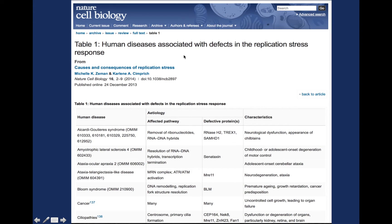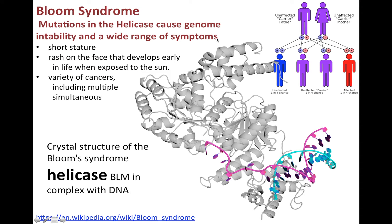There are also human diseases associated with defects in the replication stress response. So if DNA is damaged, it has to be repaired and you need a DNA polymerase to synthesize the new nucleotides to replace the damaged ones. Bloom syndrome is a disease caused by mutations in a helicase. This is a ribbon diagram of the helicase molecule. Here is a molecule of DNA with the two strands in pink and green, and here you can see the double helical nature. Down here, this is where the enzyme helicase is breaking apart the hydrogen bonds that hold the complementary bases together. If you have mutations in this helicase, you can survive but you have certain phenotypic features: short stature, developing rashes on the face early in life when exposed to the sun, and you can develop a variety of cancers including multiple and simultaneous different types of cancers.